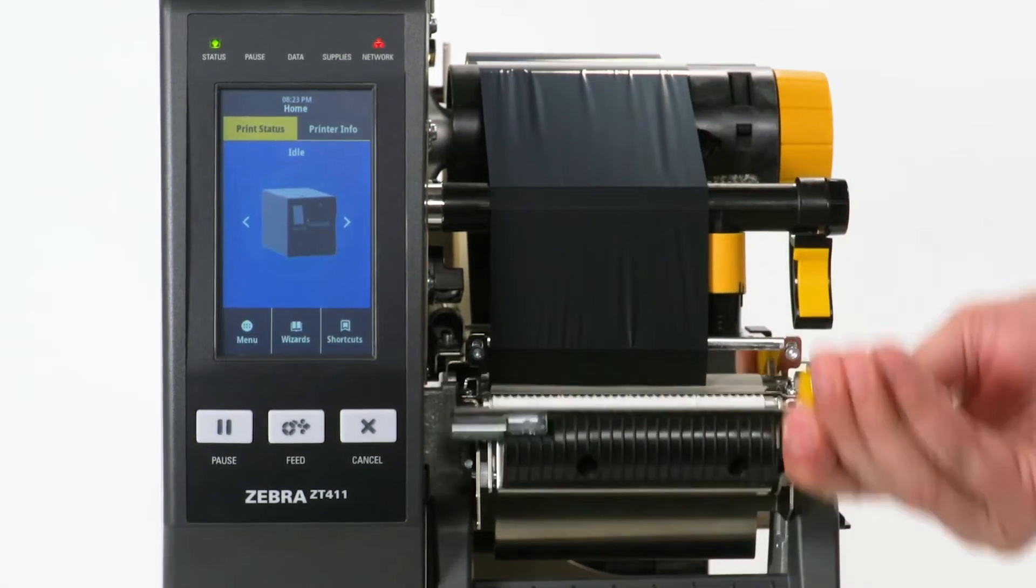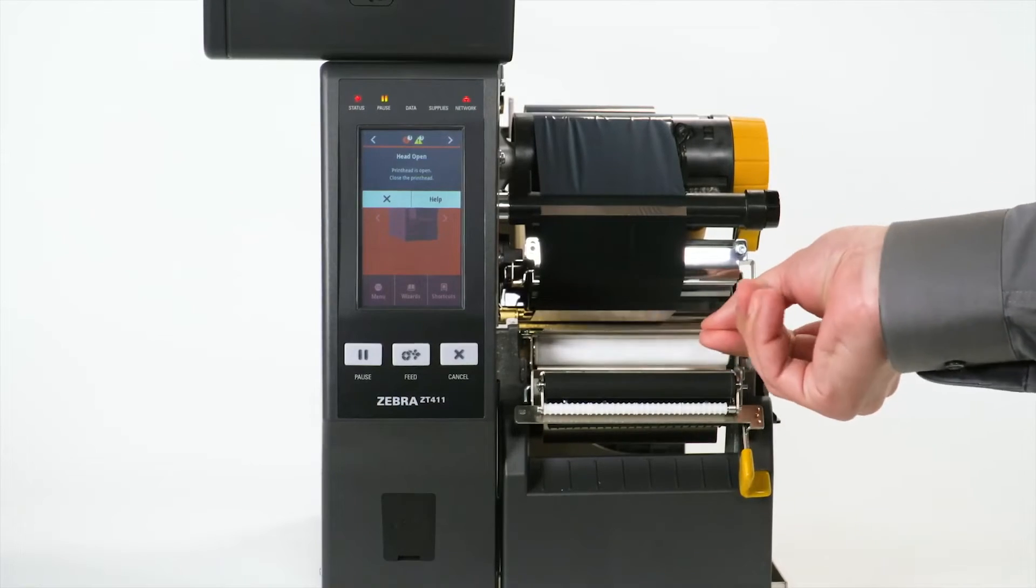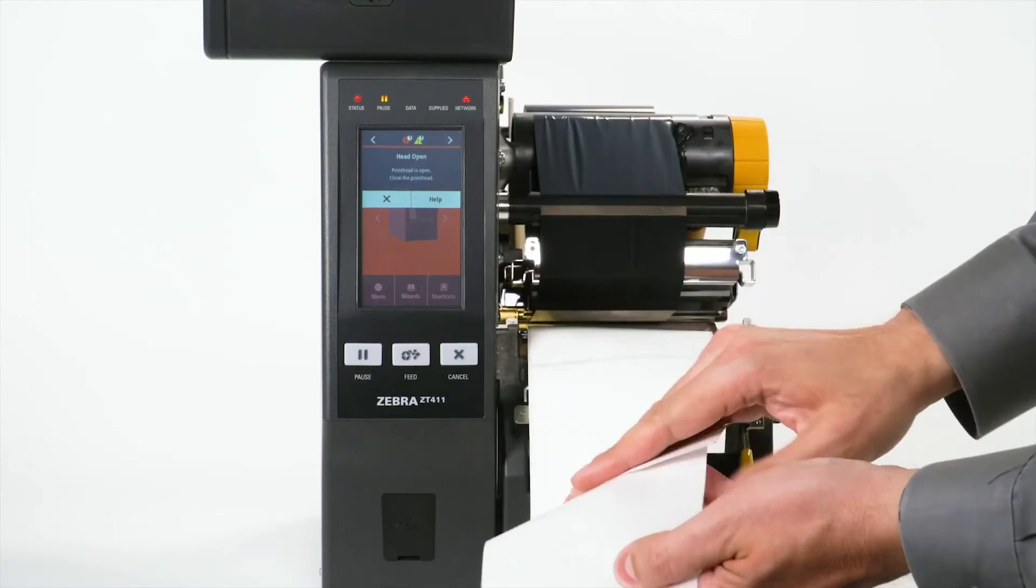Open the peel assembly. Open the print head. Pull the media out about 12 inches or 300 millimeters. Remove the labels from the liner.